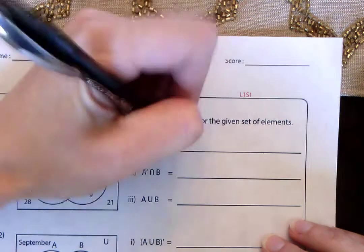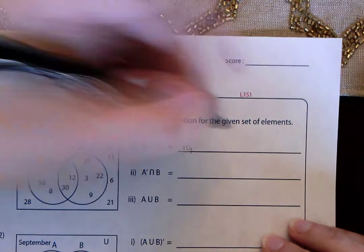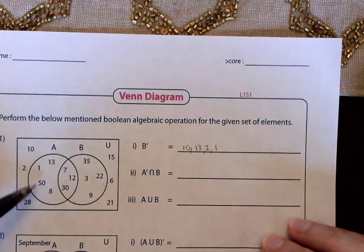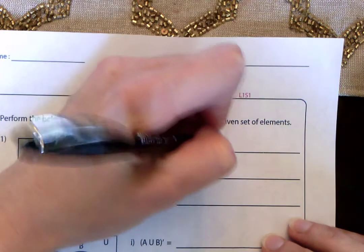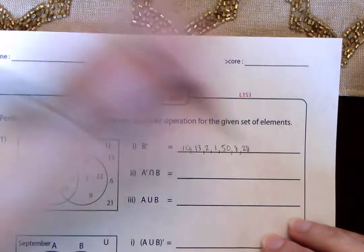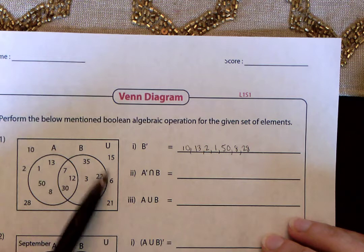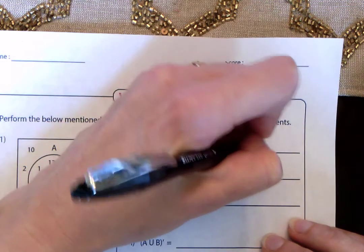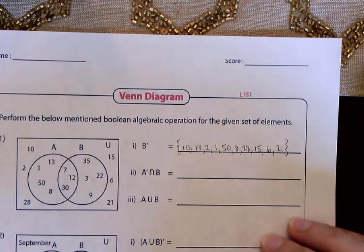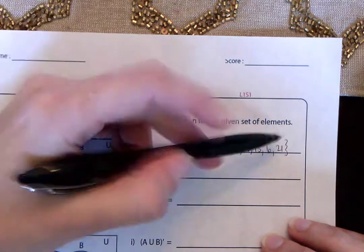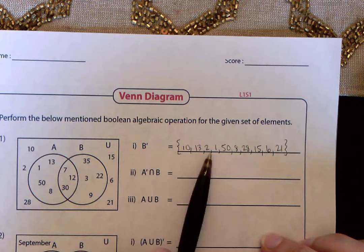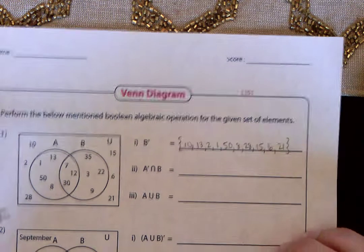Let's look at all these numbers and write them out. You don't have to do it in numerical order — I'll just write them as I see them. So: 10, 13, 2, 1, 50, 8, 28. And then these numbers over here: 15, 6, and 21. These are all of the numbers — put them in curly brackets, which just means these are the numbers in this set, and separate those numbers with commas. That's it, not too bad.